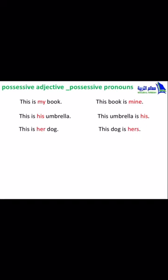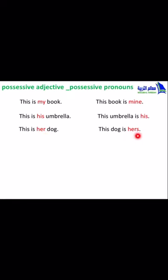Number 3. This is her dog. The word 'her' means that this dog is owned by her. This dog is hers. 'Hers' means — or is instead of — the word 'her dog'.